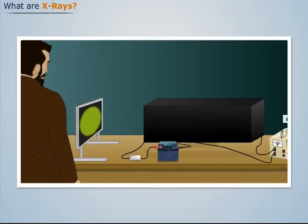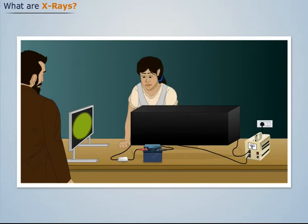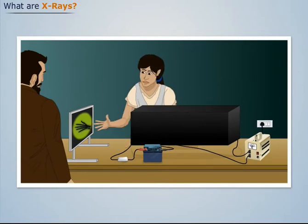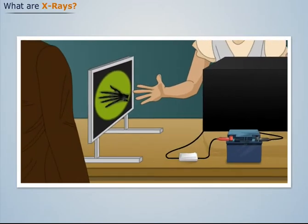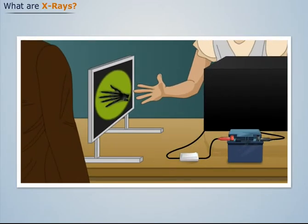Finally, he asked his wife to place her hand between the fluorescent screen and the glass tube. When she did so, he saw the shadow of the bone of her hand projected onto the fluorescent screen.